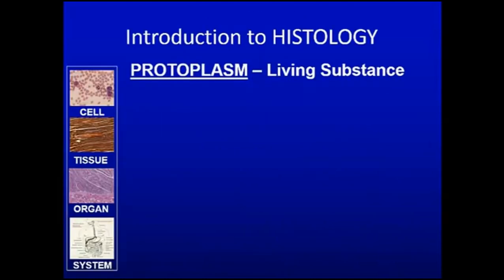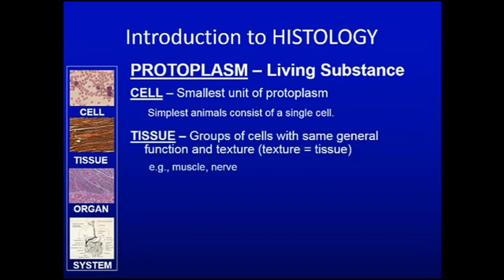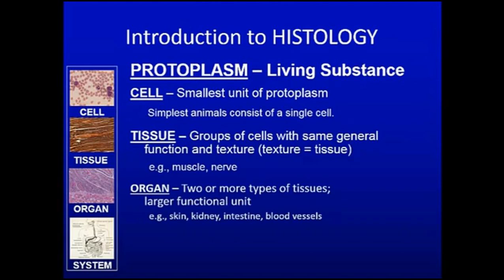If we look at living substance known as protoplasm, the smallest unit of protoplasm is a cell. Some animals only have a single cell, so the cell is the single element or unit of life. Tissues are groups of cells with the same general function or texture — muscle, nerve, connective tissue, epithelium. Those are tissues. More than two or more types of tissues makes an organ.